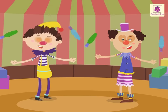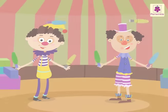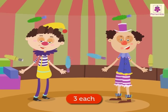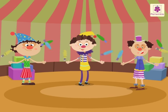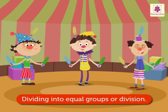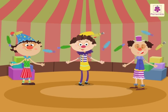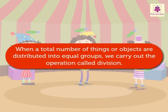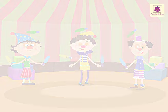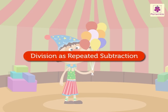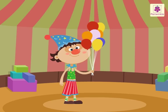In all these examples, we shared the number of objects equally according to the number of groups needed. This is called dividing into equal groups, or division. When a total number of things or objects are distributed into equal groups, we carry out the operation called division. Did you know division is actually repeated subtraction? Let us see with Jojo the clown.